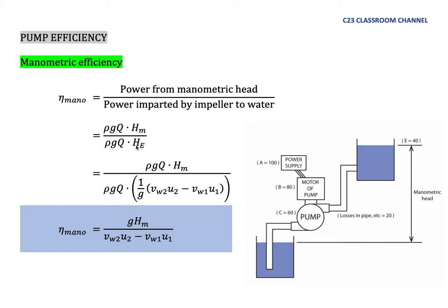We can substitute the value of H_e using the Euler head equation: (1/g)(V₂U₂ − V₁U₁), as we learned about Euler head previously. So the manometric efficiency coefficient equals H_m divided by the Euler head expression.